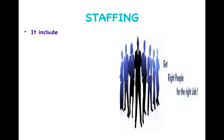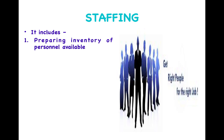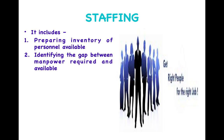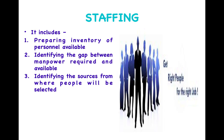The next function is staffing. Staffing is all about getting the right people for the right job. It includes preparing an inventory of personnel available — who all are working in the organization and what they are doing. It is important to understand the job role of each individual available. Once we identify the manpower we already have, we also need to identify the gap between the manpower required and manpower available. If we do not have sufficient manpower, it is important to identify that gap. Once identified, we also determine the sources from where people will be selected to get the manpower required.